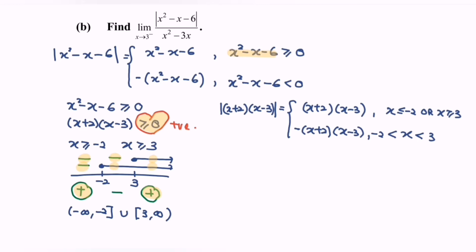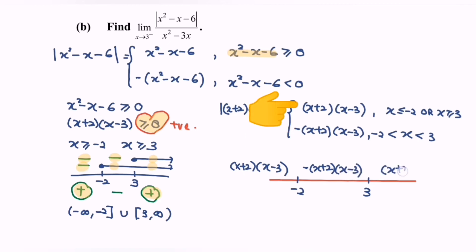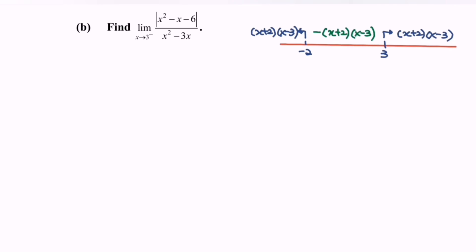Illustrate the situation on a number line with negative 2 and 3. Referring to the function: if x ≤ negative 2, the function is (x plus 2)(x minus 3); in between negative 2 and 3, we have negative (x plus 2)(x minus 3); and for x ≥ 3, we have (x plus 2)(x minus 3). Now, substitute the value 3: we have 9 minus 3 minus 6 equals 0, over 9 minus 9, which again equals 0. So this is the indeterminate form.